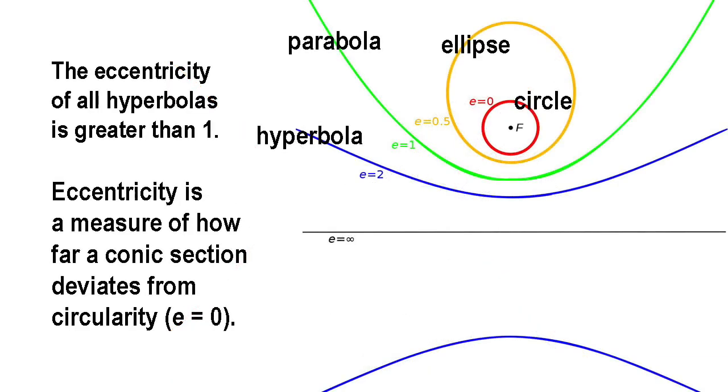The larger the value of e, the more the hyperbola resembles two parallel lines. Just as the circle, for which e equals 0, is the limiting case of the ellipse, for which 0 is less than e is less than 1, so the parabola, for which e equals 1, is the limiting case of both the ellipse and the hyperbola.